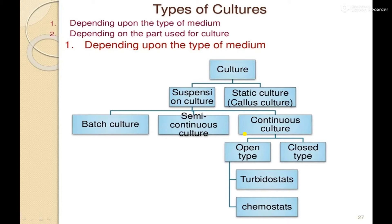Next point: types of cultures. There are two types of cultures — first, depending upon the type of medium, and second, depending on the part used for culture. Based on the type of medium, there are two types: suspension culture and static culture, also called callous culture. In suspension culture there are three types: batch culture, semi-continuous culture, and continuous culture. In continuous culture there are two types: open type and closed type. In open type there are again two types: turbidostats and chemostats.